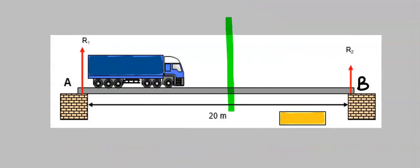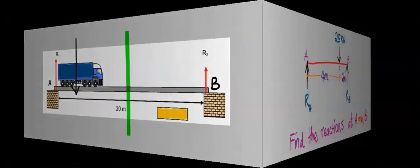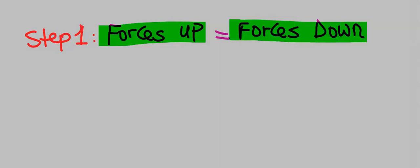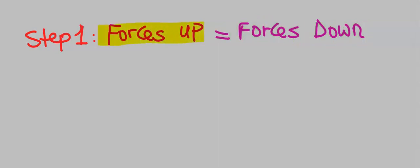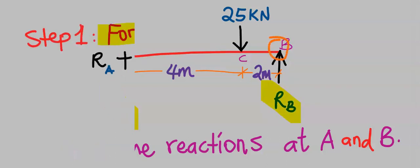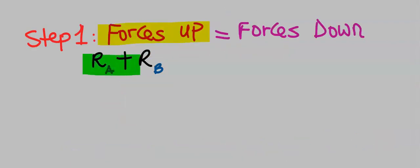The 25 kilonewton load is acting two meters away from point B. If this is the center of the beam, you can see that the load is acting away from the center. To solve this problem, step number one: forces going up is equal to forces coming down. The reaction at point A is going up, likewise the reaction at point B is equally going up, hence R subscript A and R subscript B are both pointing up.